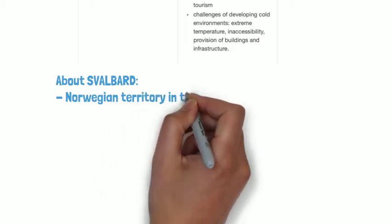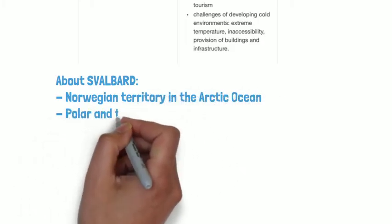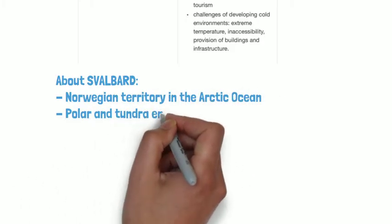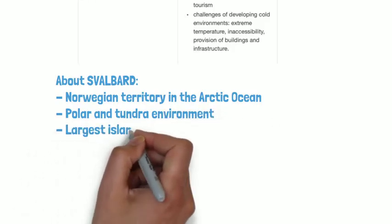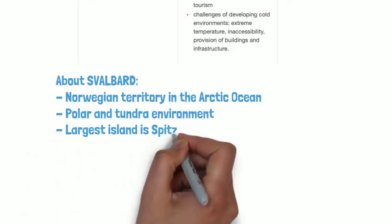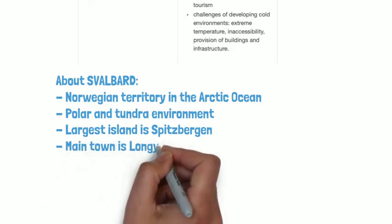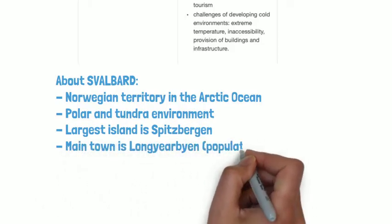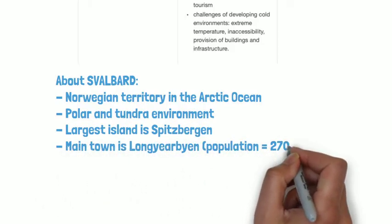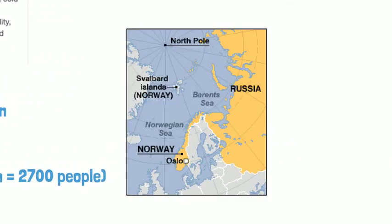About Svalbard: it's a Norwegian territory located in the Arctic Ocean. It is a mixture of polar and tundra environment. The largest island is Spitsbergen, which has the main town of Longyearbyen, with a population of 2,700 people.